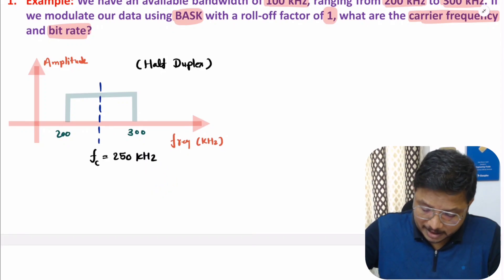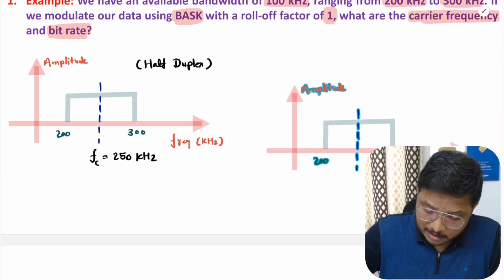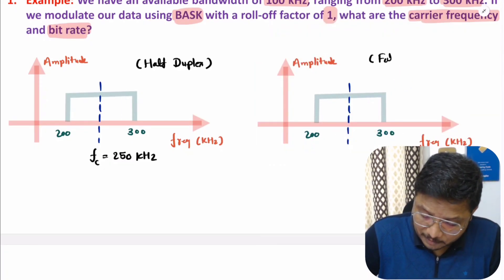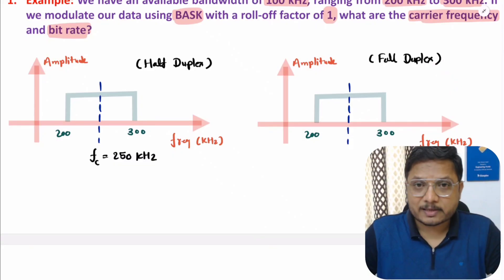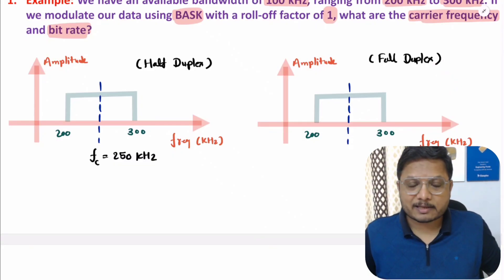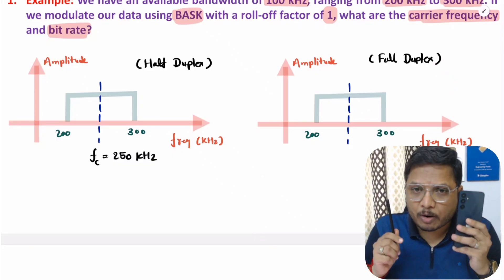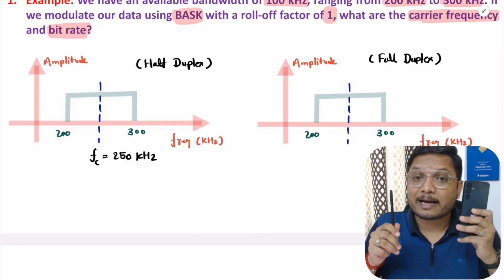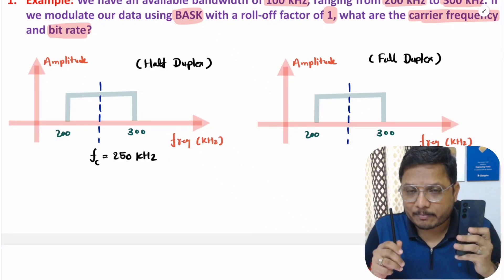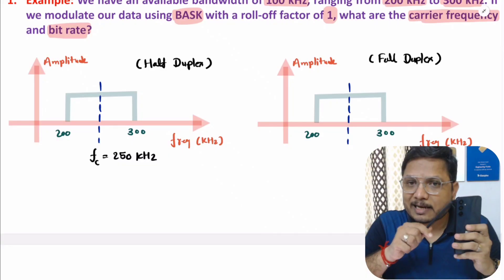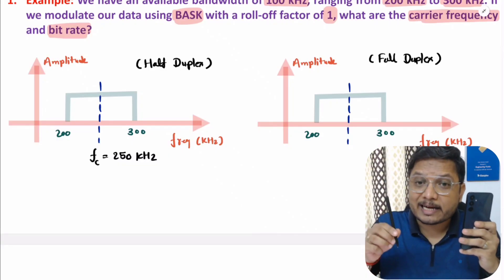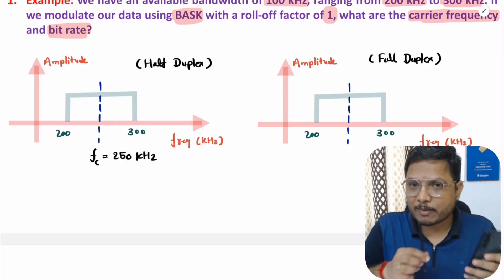Now let me explain carrier frequency for full duplex communication. In full duplex communication, if you have two modules, both of these modules can transmit and receive the data at the same time. Like if mobile is transmitting data to satellite, at the same time satellite can also transmit data to mobile.